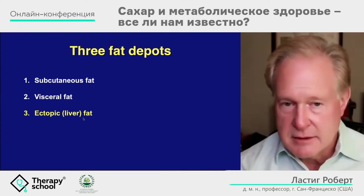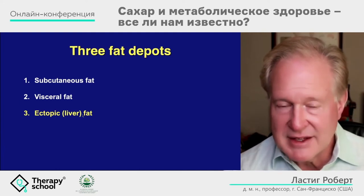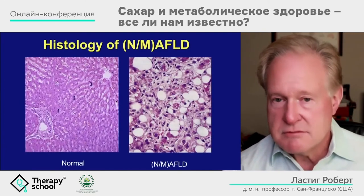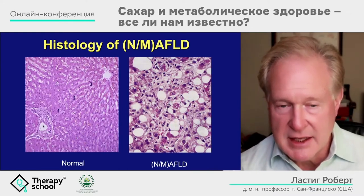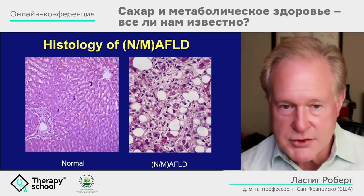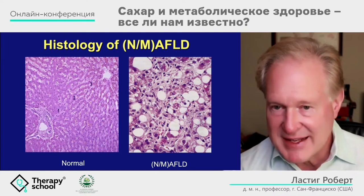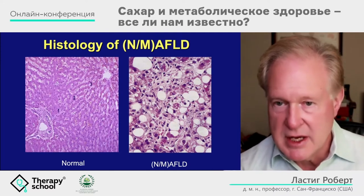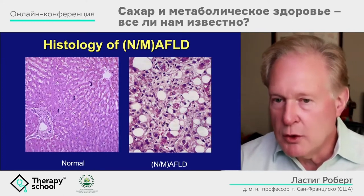The third fat depot is liver fat. Here we have photomicrographs of two livers: normal liver with well-ordered sinusoids, bile canaliculi, and Kupffer cells, and fatty liver disease with fat vacuoles, macrophages moving in, and early fibrosis. The problem is you cannot tell what caused it. Prior to 1980, if you saw this under a microscope, it was an alcoholic.